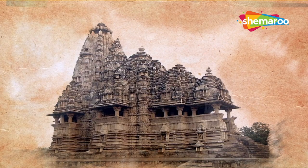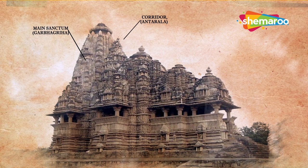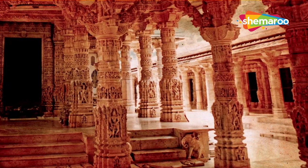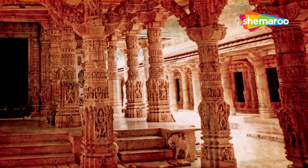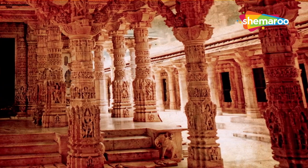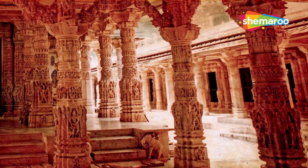The temples have a Garbha Griha or the main sanctum, the Antarala or the corridor, the Mandapa or the assembly hall. Above the Garbha Griha, there is the Shikhara or the temple tower. The rooms inside the temple are interconnected and placed in an east-west line.